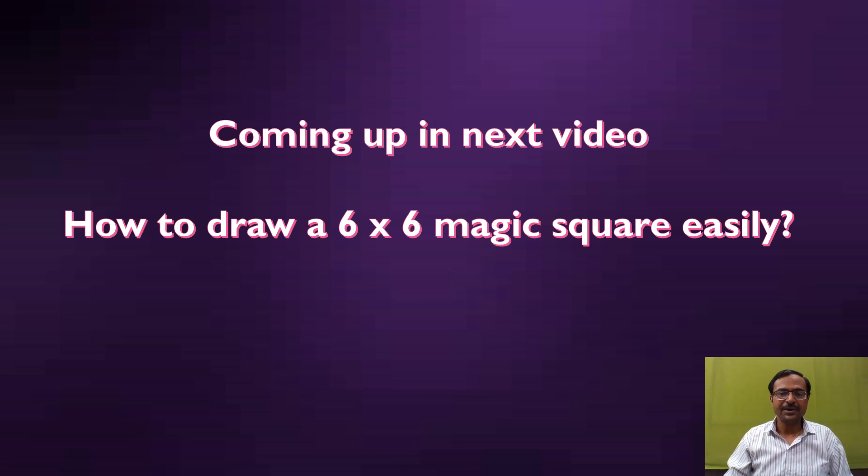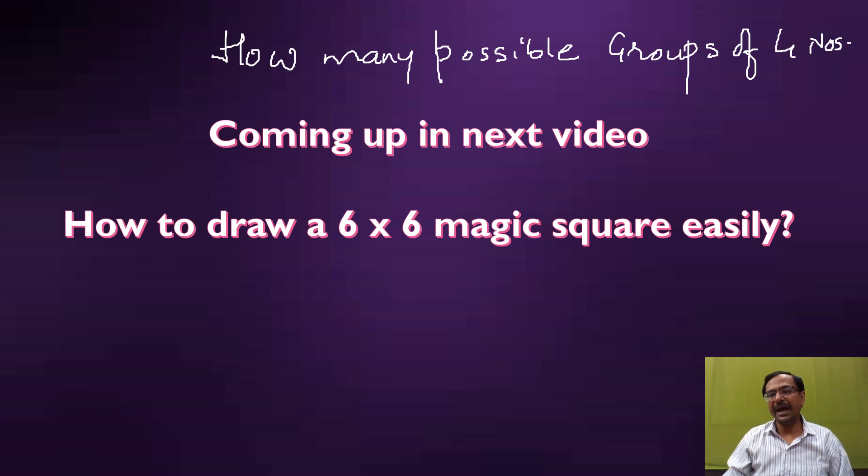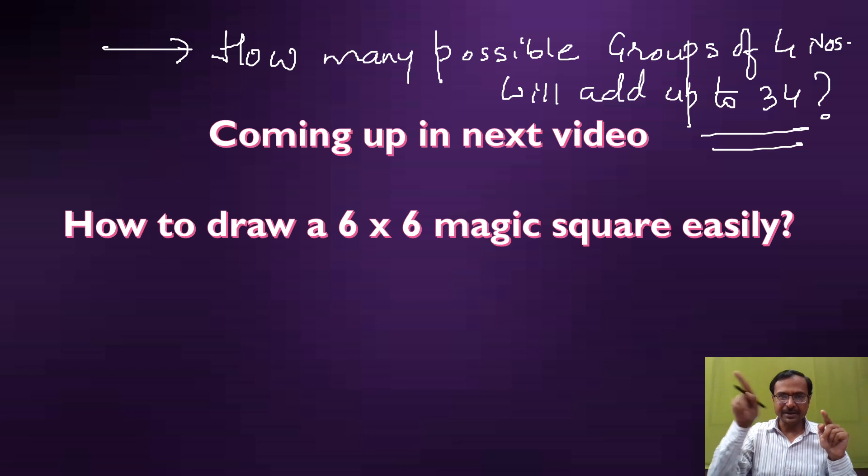The question is, if you have that magic square which I have just shown you, how many possible groups of 4 numbers will add up to 34? Just check in the magic square which I just showed you, and you will tell me in the comments below. Check the rows, check the columns, check the diagonals, check 4 numbers together. I have given you a hint, they have to be forming a square. So check whether they are getting a sum of 34 or not, and if yes, do tell me how many possible combinations are there.